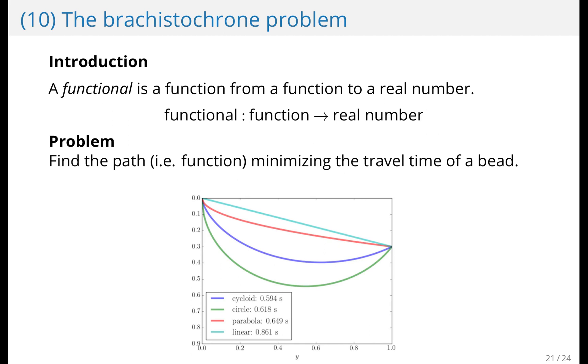The last problem is the brachistochrone problem. And to understand that you have to understand what a functional is first. A functional is a function from a function to a real number. For instance, the length of a function is a functional. So if I give you a function, you can give me the length back, then you're a functional. Or an integral with given limits, so an integral from a to b, that's also a functional because it takes this input a function and it gives you back a number, which is the integral.